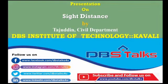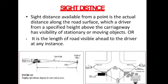Hello students, welcome to my next class of transportation engineering. This video covers the topic of sight distance. Sight distance available from a point is the actual distance along the road surface which a driver, from a specified height above the carriageway, has visibility of stationary or moving objects.